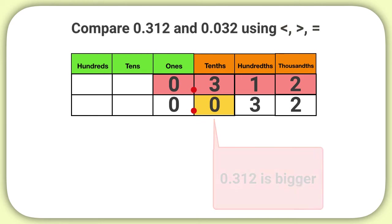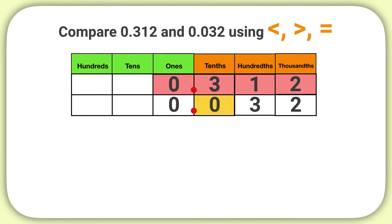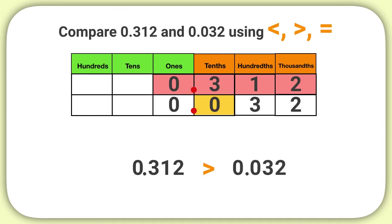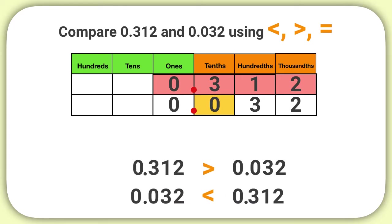Which symbol should I use to show that 312 thousandths is greater than 32 thousandths? The greater than symbol. 312 thousandths is greater than 32 thousandths. You could also write this as: 32 thousandths is less than 312 thousandths.